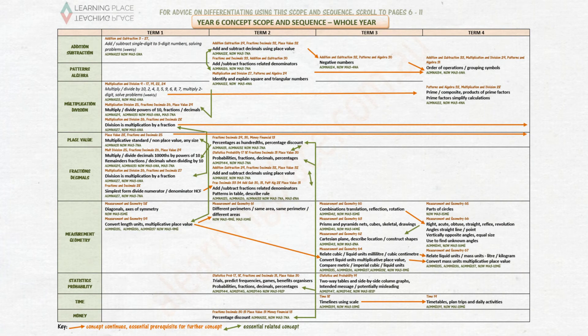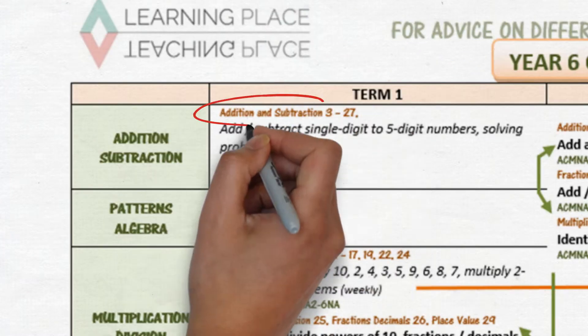Page 1 contains a whole year overview of the concepts taught in Year 6. A green arrow shows the links between essential related concepts. An orange arrow shows the essential prerequisite for further concepts.